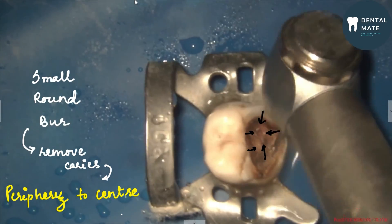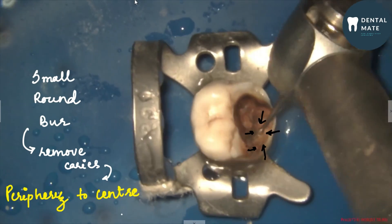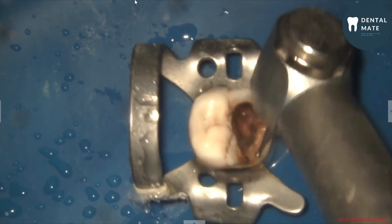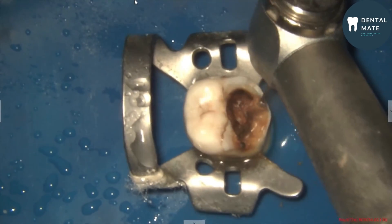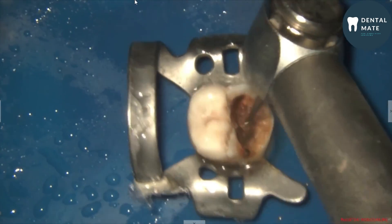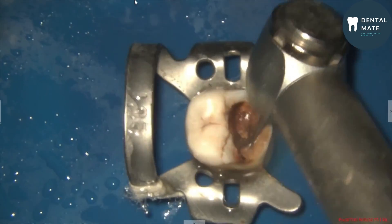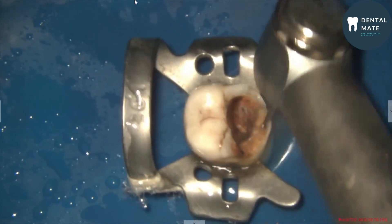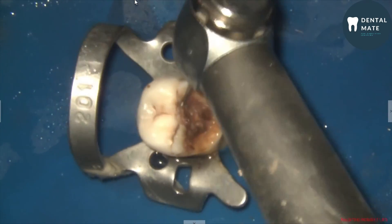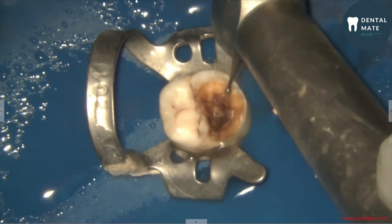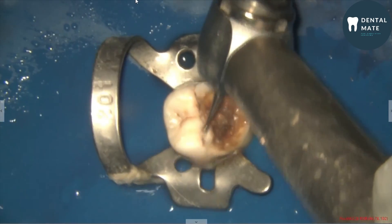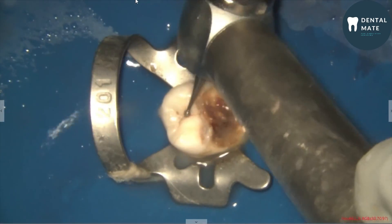We start with a small round burr to remove the caries. Caries has to be removed always from periphery to the center, so first we remove all caries present in the periphery with a small round burr. For the small round burr, the working direction can be directed apically. But whenever we switch to the EX-24 or the safe-end burr, the burr has to be operated in a lateral cutting direction and not in an apical direction.